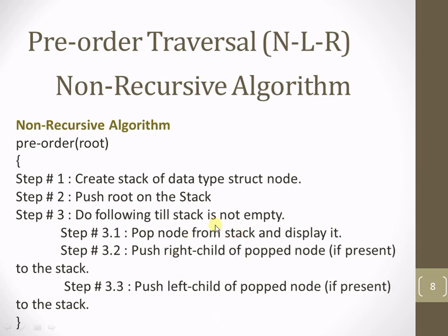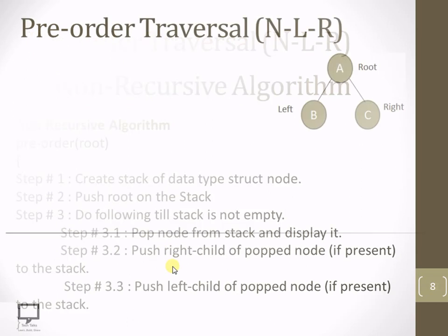Now, why do we push the right child first? Because the stack follows the last-in-first-out property. We want to process the left child first, so the left child should be inserted last — meaning we push right first and then push left. This ensures the left child is on top of the stack and gets processed before the right child. All these things I am going to explain with an example.